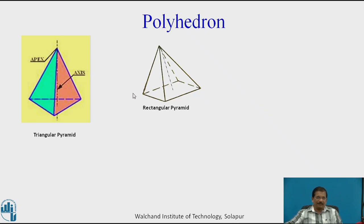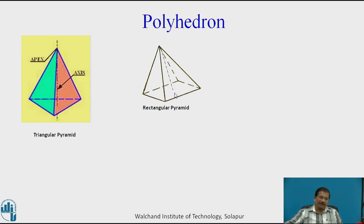This is a rectangular pyramid. The base will be a rectangle with four corners. The apex will be on the axis line drawn perpendicular from the center of the rectangle. In case of a rectangular pyramid the base is a rectangle; in case of a square pyramid it will be a square. Draw a perpendicular line and at the given axis length you will get the apex O. Join the apex with each corner of the base to get the pyramid.